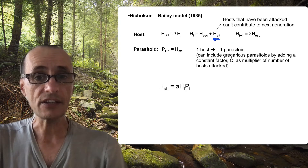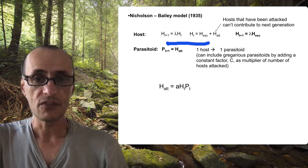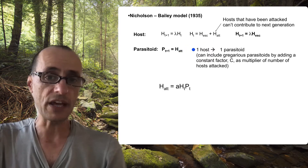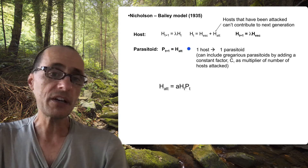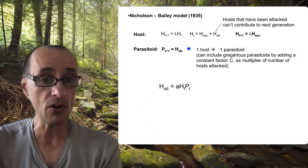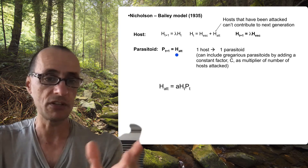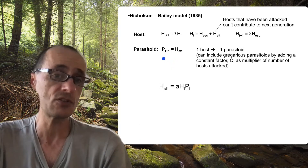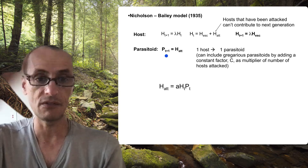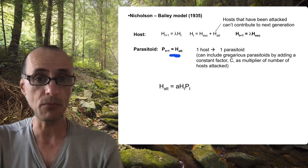The hosts that are attacked are the ones that generate a new parasitoid. Now, this may seem unreasonable that one host generates one parasitoid, but if we imagine a gregarious parasitoid where a female might lay 10 or 100 eggs into a particular host, then you can multiply the number of hosts attacked by some constant C — so for every one that's attacked, maybe you get 10 new parasitoids. But if no attacks actually happen, the parasitoid population dies out. There's no way for these parasitoids to live without actually attacking a host.